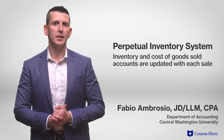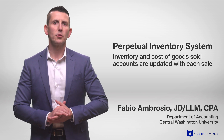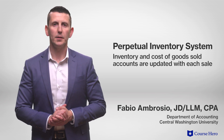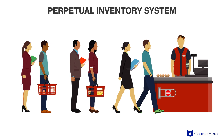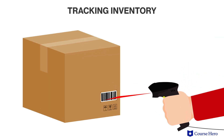In a perpetual inventory system, the inventory and cost of goods sold accounts are updated with each sale. Imagine an accountant next to each customer in line at the register — as the cashier scans each item, the accountant removes it from inventory and adds it to cost of goods sold. This scenario would be absurd, but barcodes and scanning machines make it possible. Thanks to barcodes and scanning machines at the registers, inventory can be tracked in real time, so the amount of inventory on hand is always current.